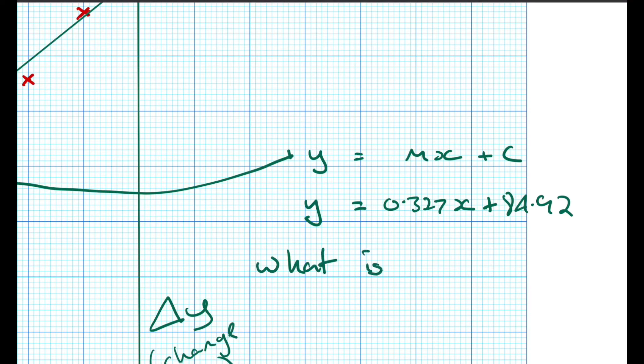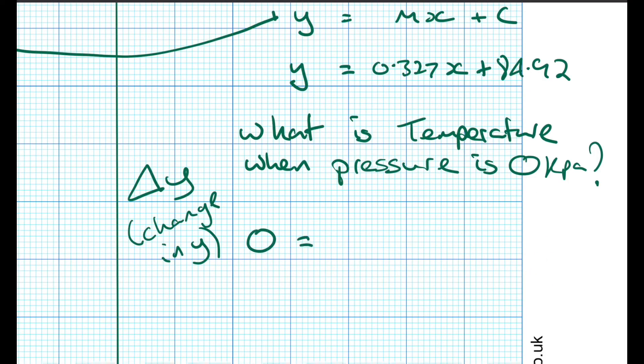So back to our starting question: what is the temperature when the pressure is zero kilopascals? The solution to that is pretty straightforward. If we substitute in a pressure of zero instead of y, then we can work out the value of x for that pressure. That will give us the temperature at zero pascals.